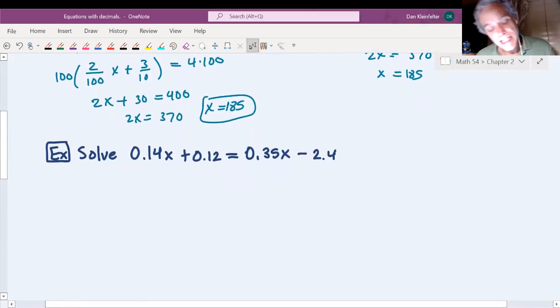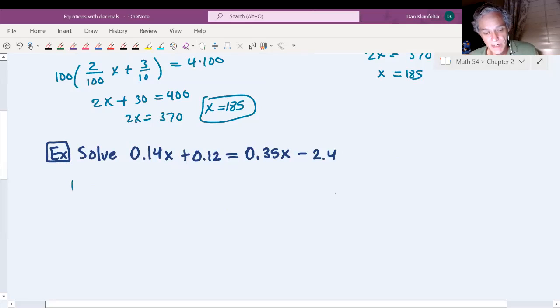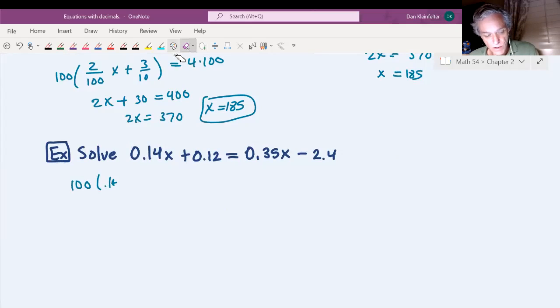So in this next example, we have three decimals, four decimals, actually. There's two digits behind the decimal in the first one, two in the second, two in the third, and only one in the fourth. So the greatest number of digits you see behind the decimal point is 2. So we're going to multiply both sides by 100. And I like to show this, but you may not need to in order to get this done. But I like to show it. So we're multiplying both sides by 100.